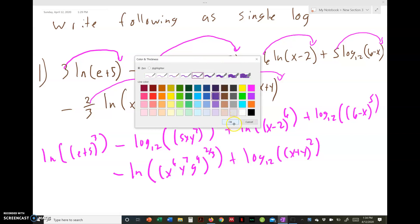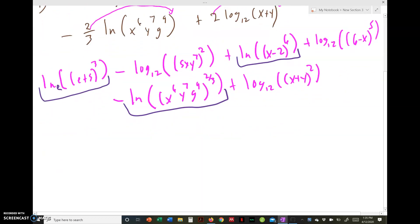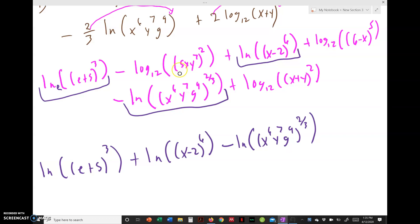Now we need to organize it with the same bases. Remember, ln is base e, so we're going to group all of our base e's. If you have to, highlight them, do some type of color coding so you know which ones. We want the addings first, so the first term and third term are going to go first, and then the fifth term. Then you do the same thing with the base 12s. You're going to put the 4th and 6th term first, and then the 2nd term.